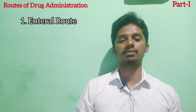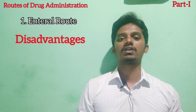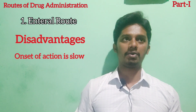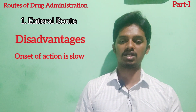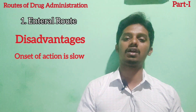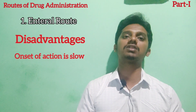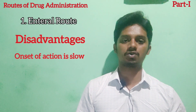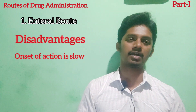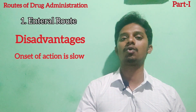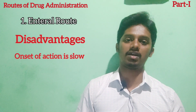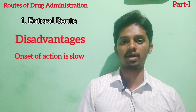If you look at the drawbacks or disadvantages, the first major one is that most drugs taken via oral route have a slower onset of action. The onset of action is the time at which the action is produced. If you take a drug at 1 o'clock and the effect is produced at 1:30, the onset of action is 30 minutes. In oral route it can be 30, 45, or even 60 minutes, which is very slow. Therefore, this route is not preferable in emergency situations. If there is a heart attack, the delay of 30 minutes to 1 hour could be fatal. This is one of the most severe drawbacks of the enteral route.